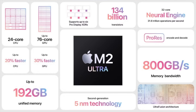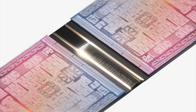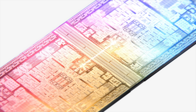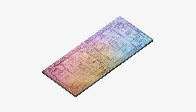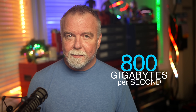The M2 Ultra is a behemoth of a chip — up to 24 cores, 60 GPU cores, and a neural engine to boot. But what sets it apart isn't just what's on the chip, it's how the memory is arranged around it. Instead of slapping in some SODIMMs on a motherboard, Apple took the bold step of integrating the memory directly onto the chip package using a silicon interposer. That means the LPDDR5 memory modules are right next to the SoC — on a shared substrate with a thousand-pin connection. We're talking about a 1024-bit memory bus capable of delivering up to 800GB per second of bandwidth.